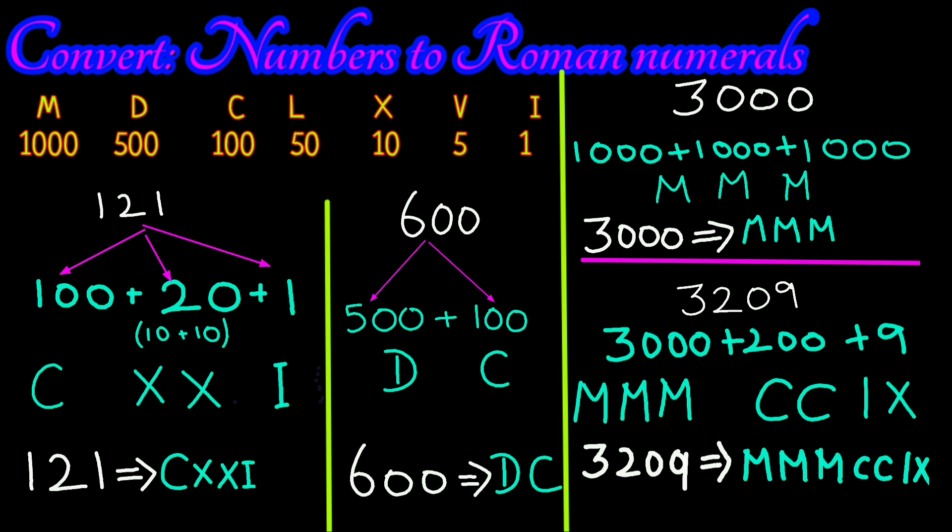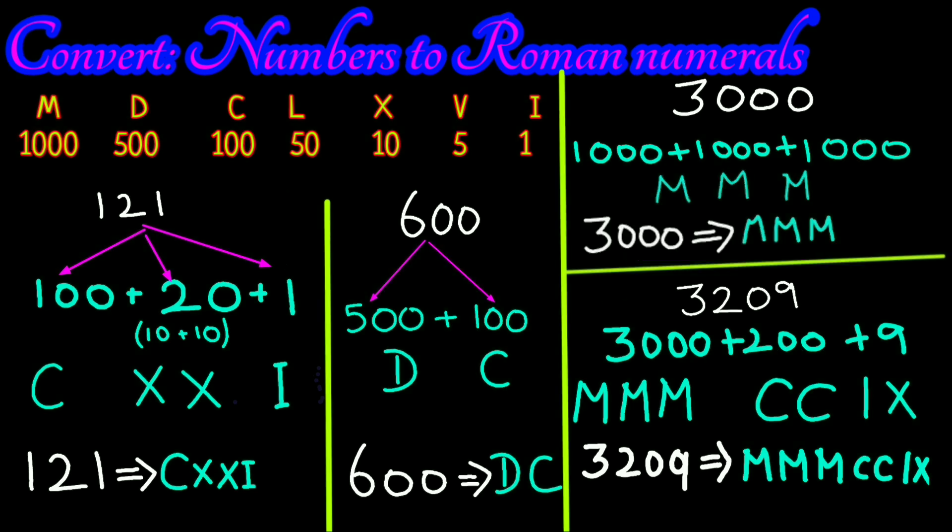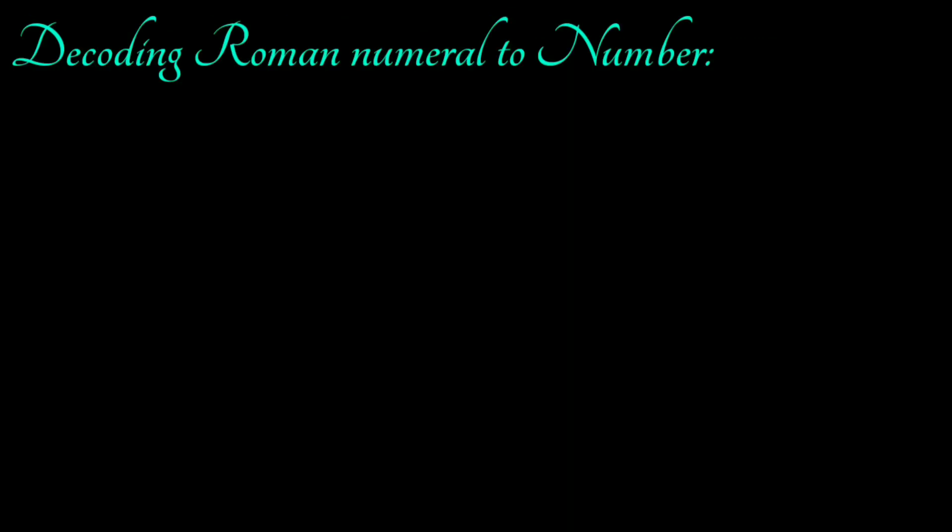This is the Roman numeral system. With it, you can show any value from 1 to 3,999. Let's try decoding two different Roman numeral values. If I space the letters out, you will find it easier to understand each part.